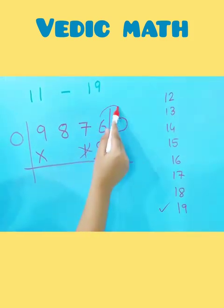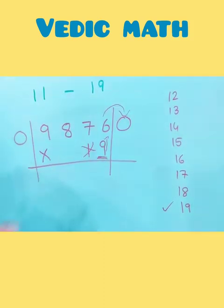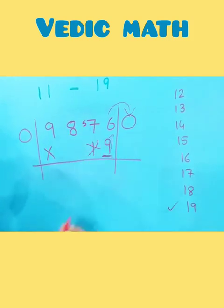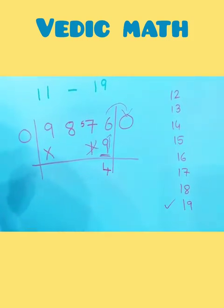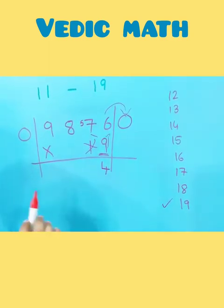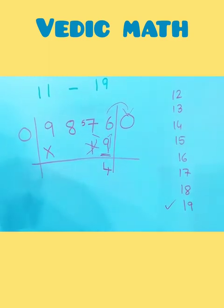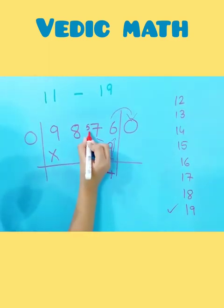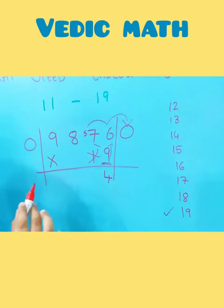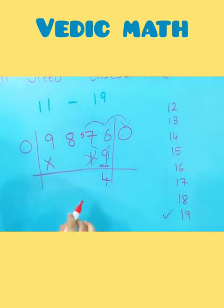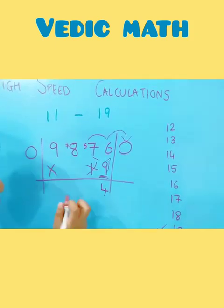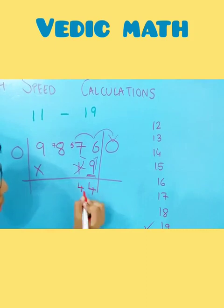9 multiplied by 6 is 54. 54 plus 0 is 54 — carry over 5 and write 4 in the units place. Now multiply 9 with 7, which is 63. 63 plus 5 equals 68, and 68 plus 6 equals 74. So 7 is carried over and 4 is written in the tens place.